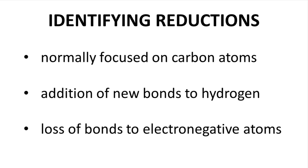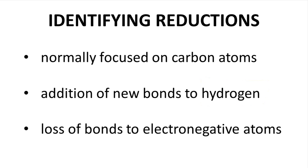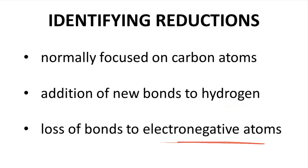First, we will emphasize reductions of carbon atoms in this video — organic chemists spend most of their time worrying about carbon atoms. Second, one common way to recognize a reduction reaction involves the addition of a new hydrogen atom to a carbon. Third, another common way to recognize a reduction reaction is to lose a bond to an electronegative atom, such as oxygen or a halogen. As we go through these reactions, if you are questioning whether the reaction is truly a reduction, look for either the addition of a hydrogen atom or loss of a carbon–electronegative atom bond.